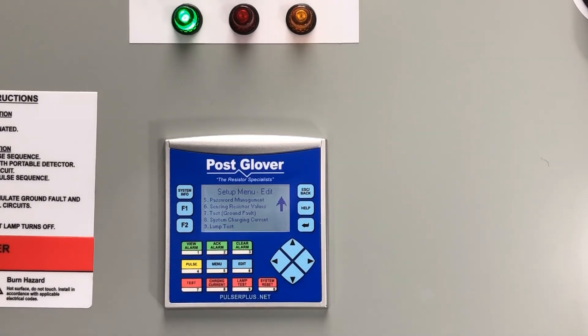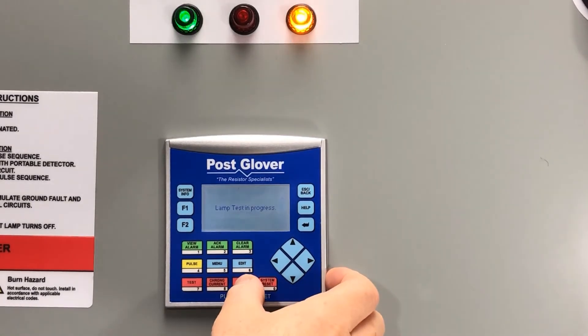Now you can press the number 9 button and make sure you hold it in for a few seconds so you can see that the lights are functioning correctly. As you can see, the normal fault and pulse lamps above the PLC will ultimately flash until you stop pressing the button.